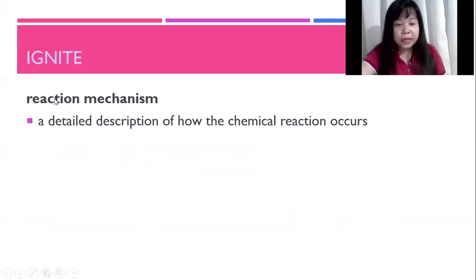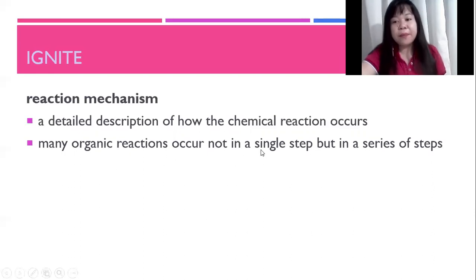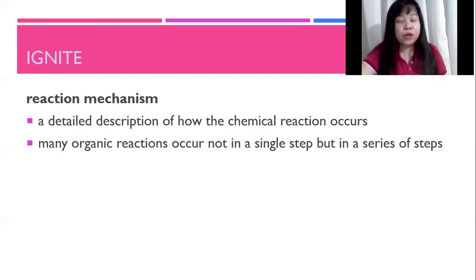To start, we first define what a reaction mechanism is. In grade 10, you discussed reaction mechanism from the point of view of kinetics, and you know already that it's a detailed description of how a chemical reaction occurs. Many organic reactions do not occur in a single step but in a series of steps. In grade 10, you were more concerned with which step was faster — the rate-determining step. However, in organic chemistry, we are more concerned about how electrons move for every step in the reaction mechanism, how bonds are broken, and how bonds are formed, because they will ultimately dictate which products will be formed out of all the possibilities.